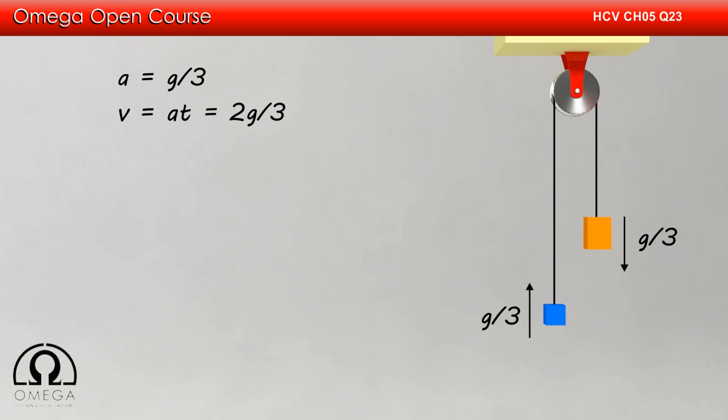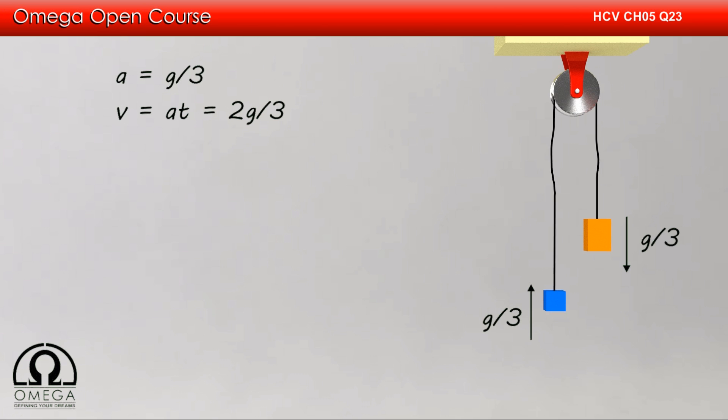So when the heavier block is stopped, the lighter block is moving with speed 2g/3 while the heavier block is at rest. The string is no longer taut and hence will apply no tension on either block. Thus, the only force acting on both blocks is gravitational force, and hence both blocks will move with downward acceleration g.